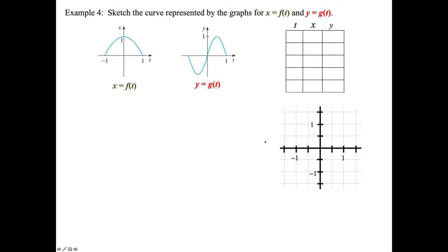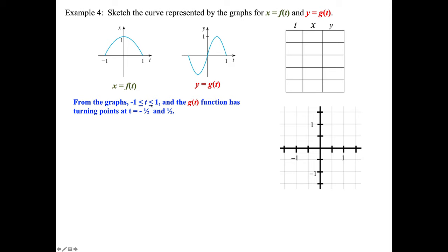Example four: sketch the curve from the graphs of x equals f of t and y equals g of t. From the graphs, -1 ≤ t ≤ 1 — the t axis is horizontal, and the dependent variable x or y is on the vertical axis, which might look a little strange. Since we have turning points at t = -1/2 and t = 1/2, we use t values of -1, -1/2, 0, 1/2, and 1.